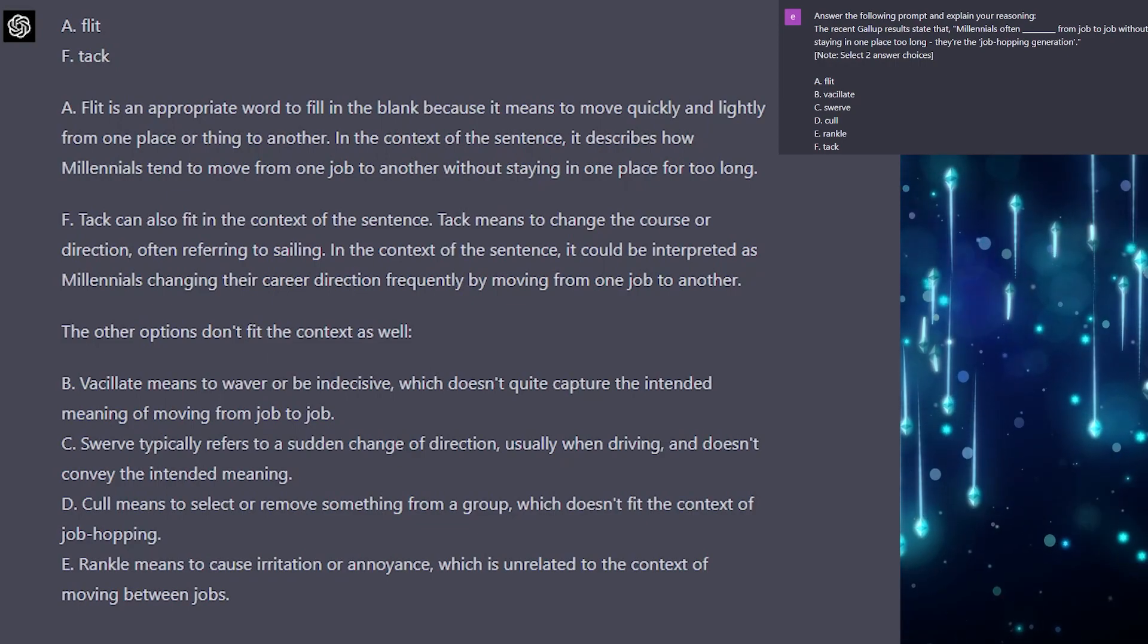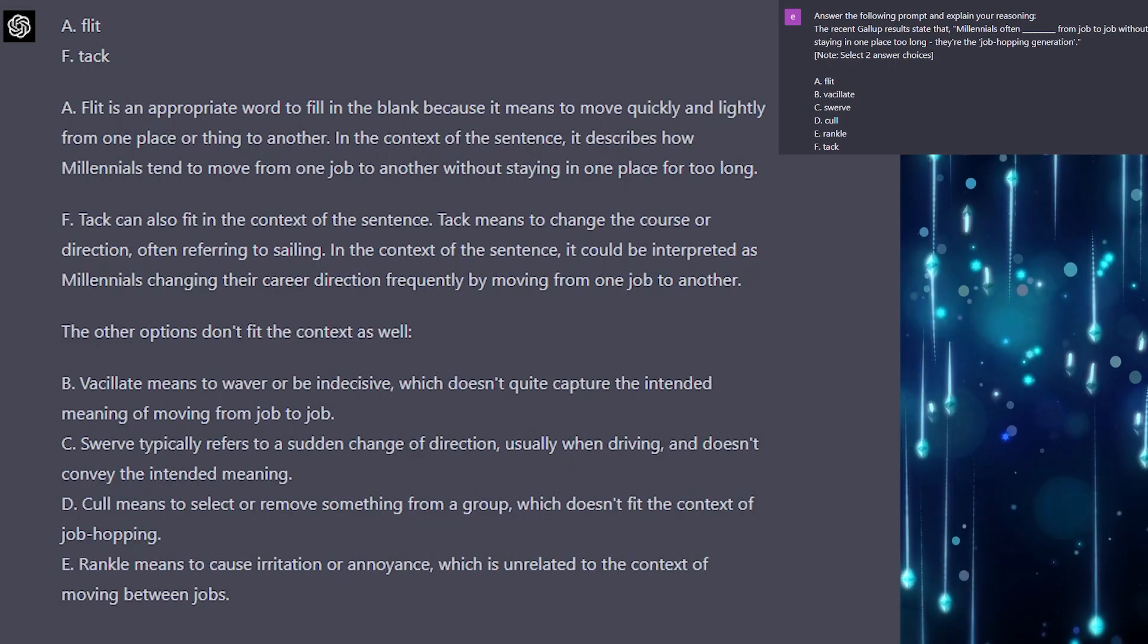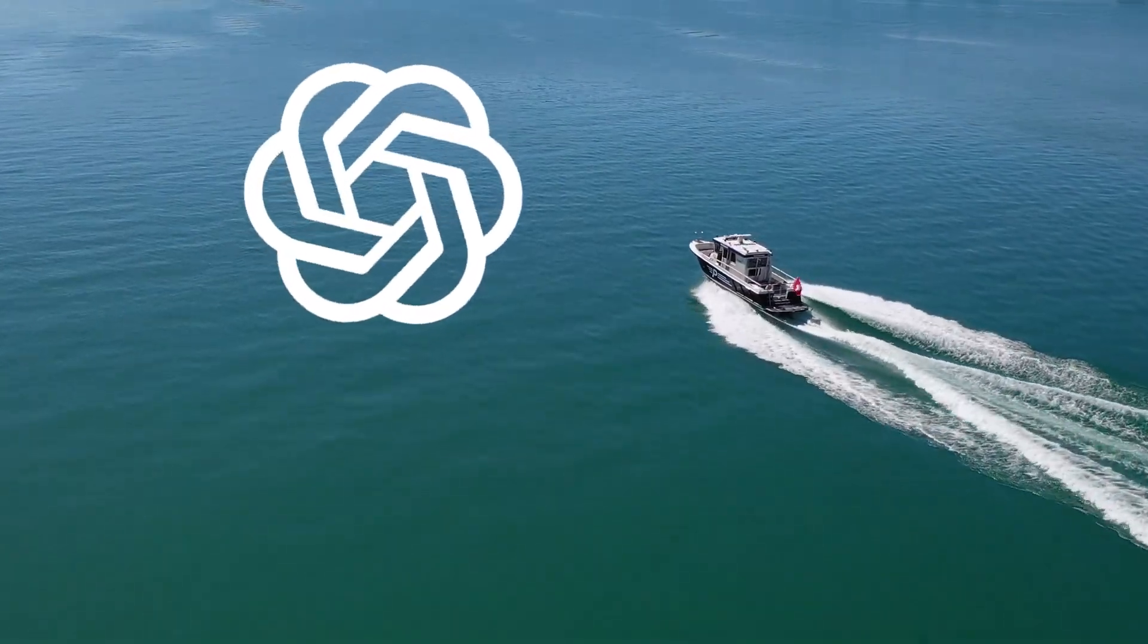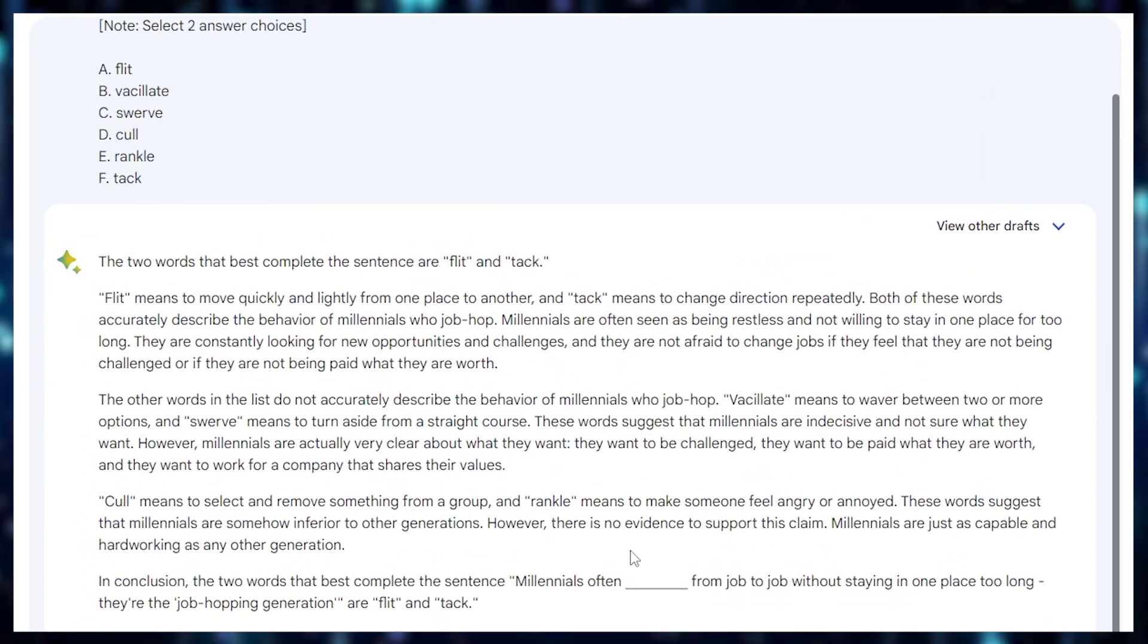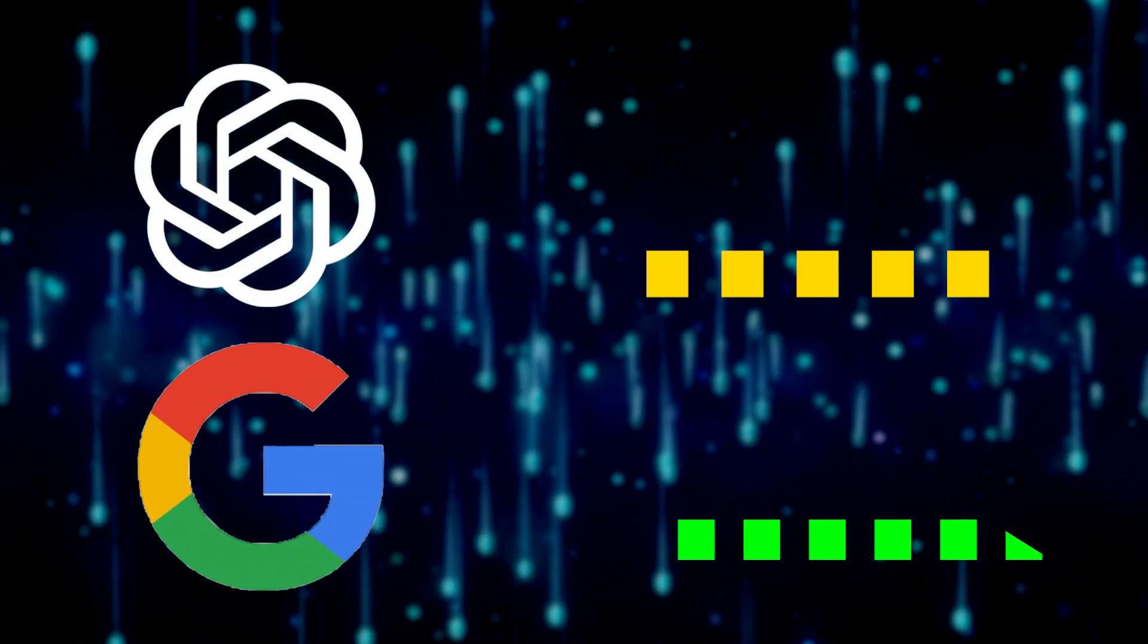Apparently, GPT-4 has a nautical bias. Nautical bias confirmed, everyone. Not really. Probably. And Bard chooses the same answers. Copycat. Half point for each.